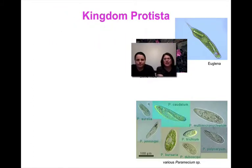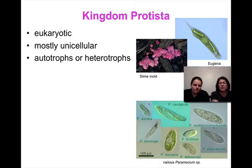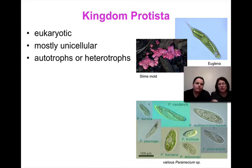Kingdom Protista is next — these organisms we call the protists. They are eukaryotic, still made of these large complex cells with lots of organelles visible inside them. Most protists are unicellular — most of those are individual organisms made of one cell, though some, like algae and slime mold, are multicellular. Protists are very different from one another: some can be autotrophs — for example, the euglena has chloroplasts and makes its own food through photosynthesis. Others are heterotrophs and need to eat things to get their energy.